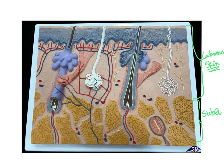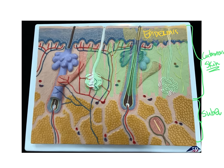The cutaneous layer, or skin, is subdivided into two layers: we have a top layer named epidermis, and underneath the epidermis we have a layer named dermis. So the epidermis and the dermis form the skin, the cutaneous layer.